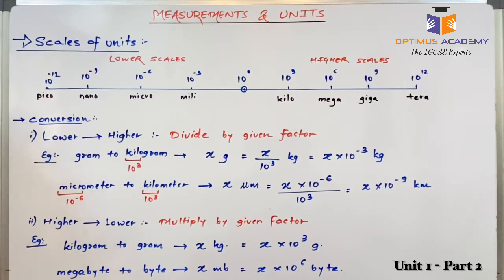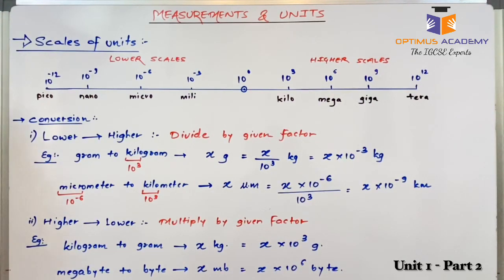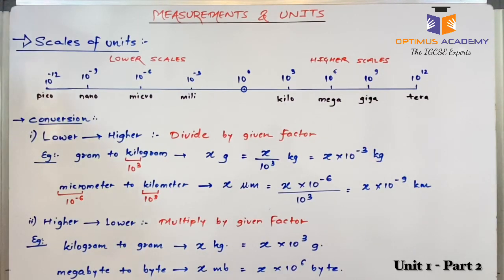For example, if I want to convert given grams into kilogram, I know that I have to divide that number by 1000, because 1 kilogram is equal to 1000 grams.